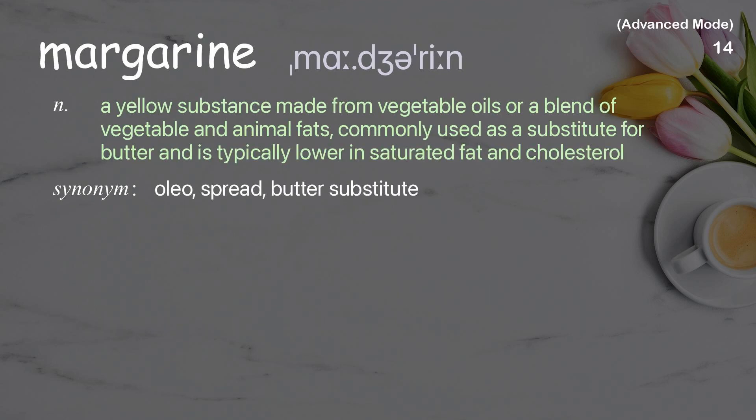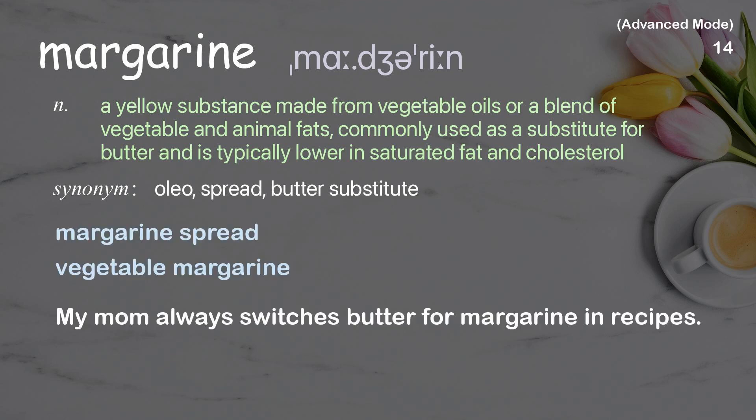Margarine: a yellow substance made from vegetable oils or a blend of vegetable and animal fats, commonly used as a substitute for butter and is typically lower in saturated fat and cholesterol. Examples: margarine spread, vegetable margarine. My mom always switches butter for margarine in recipes.